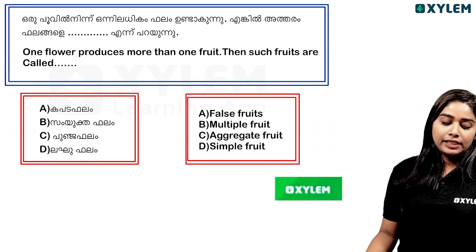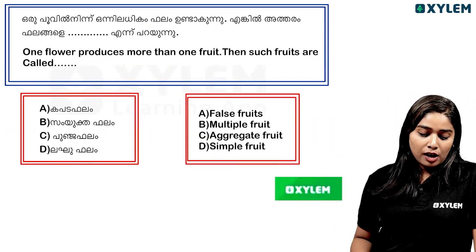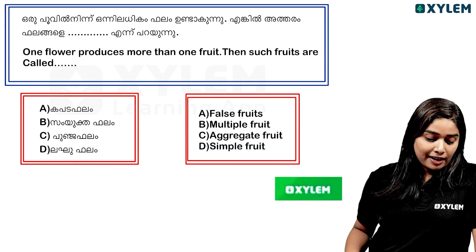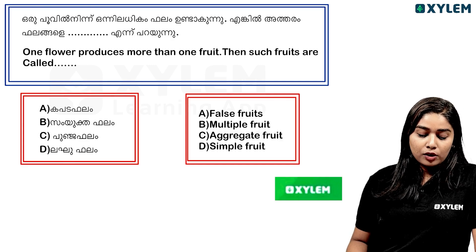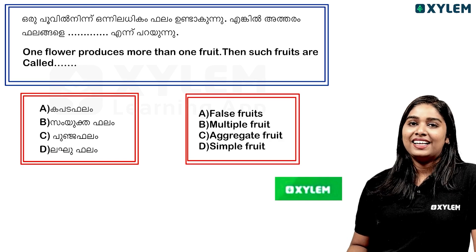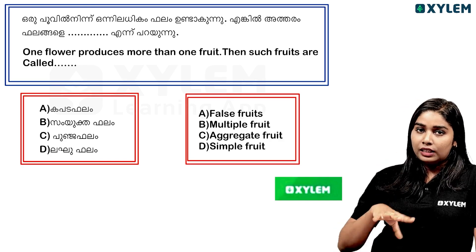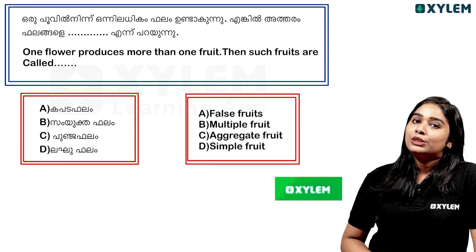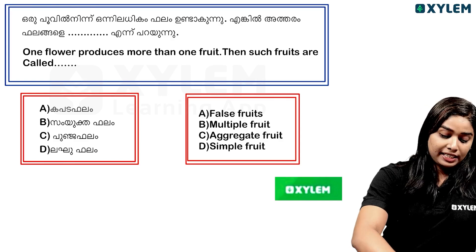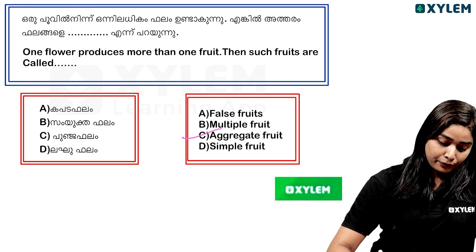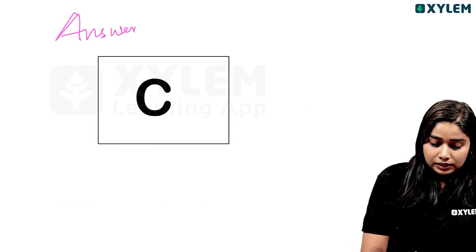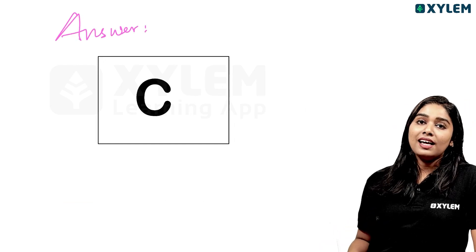First question: One flower produces more than one fruit — what are such fruits called? One flower produces more than one fruit. That type of fruit is called an aggregate fruit. The answer is Option C — aggregate fruit. That is the right answer.